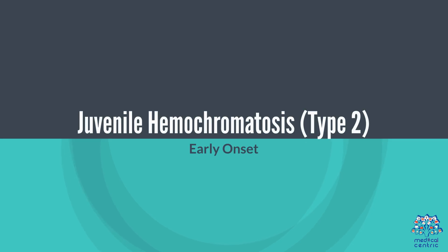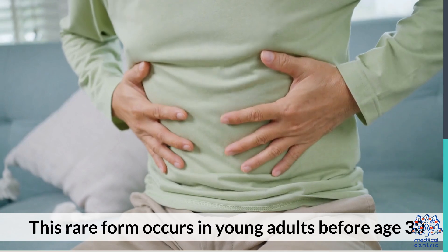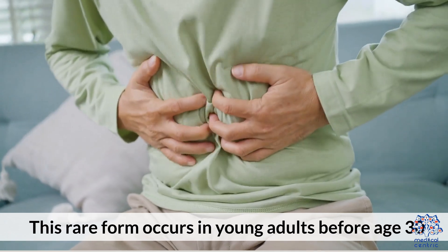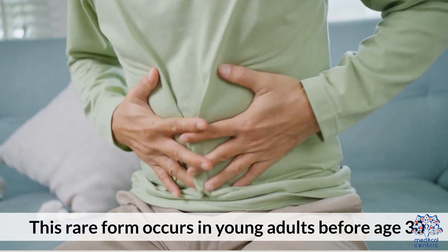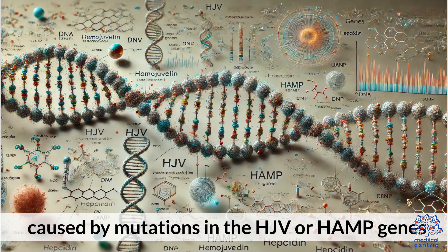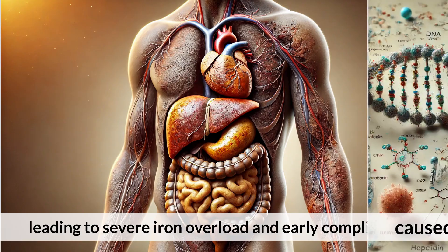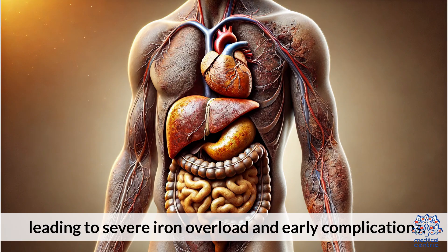Juvenile Hemochromatosis, Type 2 — Early Onset: This rare form occurs in young adults before age 30, caused by mutations in the HJV or HAMP genes, leading to severe iron overload and early complications.